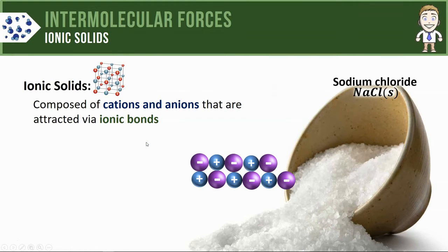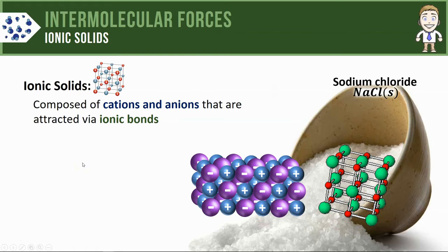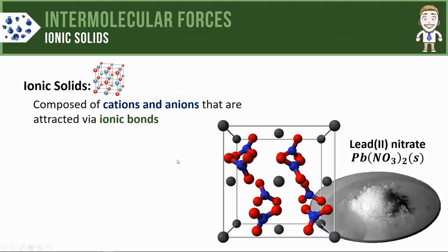Notice how each positive ion is surrounded by or lined up next to negative ions to maximize the attractive forces between them, and you end up with a solid structure. A slightly more complex example is lead nitrate, which has positive lead cations attracted to the polyatomic anions known as nitrate ions.